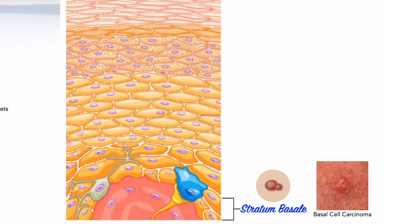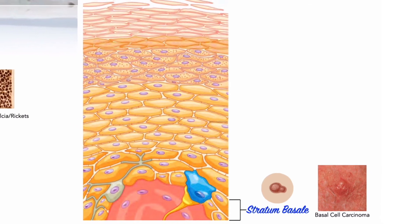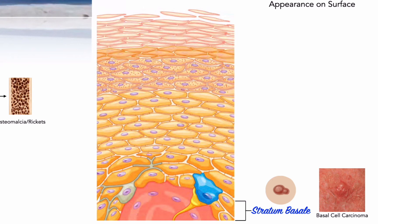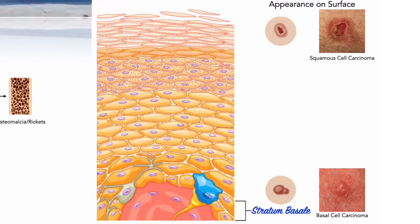Tying together our discussion from module 5.1, the names of the various skin cancers will become easier to understand. Basal cell carcinoma originates in the stratum basale. Less common are squamous cell carcinomas, which involve more superficial layers of epidermal cells. Metastasis seldom occurs in either of these cancers, and most people survive them. The usual treatment involves surgical removal of the tumor.